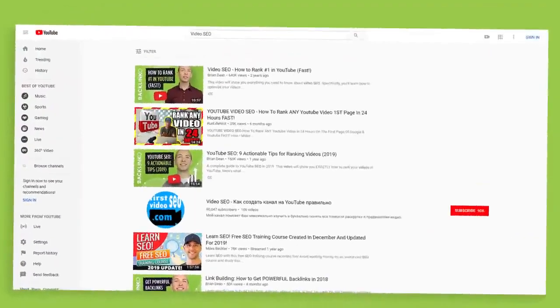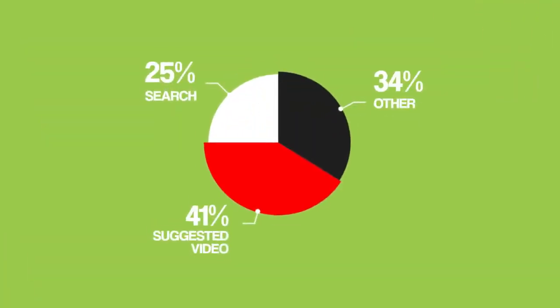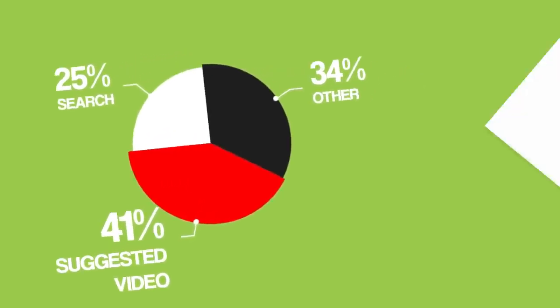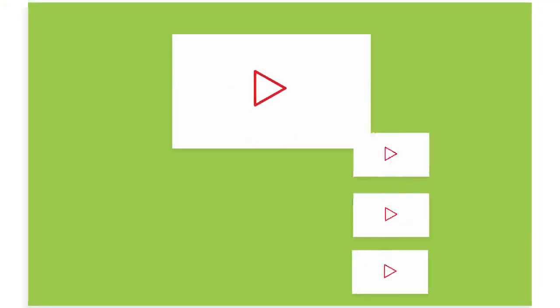Last year, I saw something that blew my mind. I was looking at where most of my YouTube views came from. And even though I rank in the top three on YouTube for popular keywords like video SEO, keyword research, and SEO tutorial, I noticed that most of my views didn't come from YouTube search — they came from suggested video. In my case, 25% of my views came from search, but 41% came from suggested video. Suggested video is the section on the right-hand side of every video on YouTube, or underneath the video on mobile. If you can get your video to appear as a suggested video, you can get thousands or even millions of views.